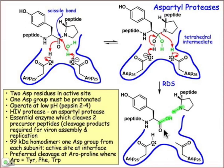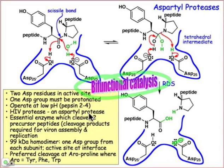The product is this amino group, the carboxylic acid group of what used to be the peptide bond. The one aspartyl group has now become acidic again, and the other one has become basic, and so we have the classical example of bifunctional catalysis.